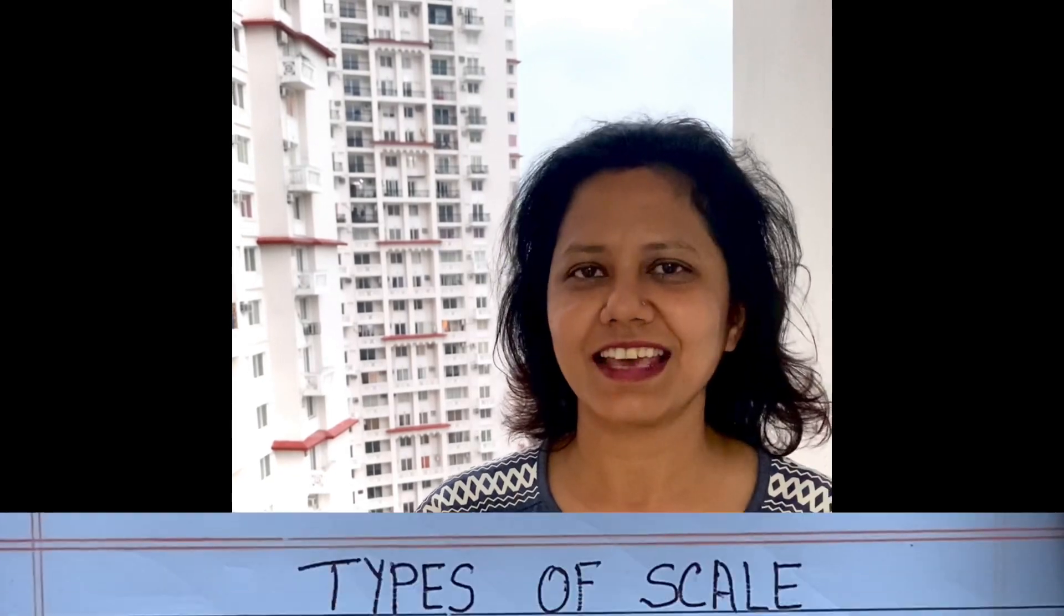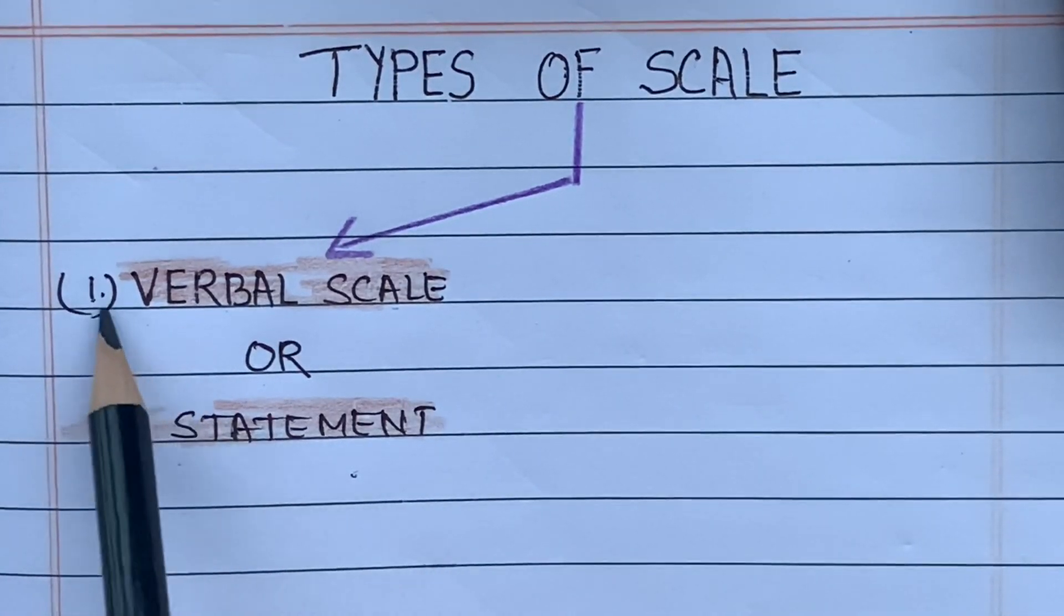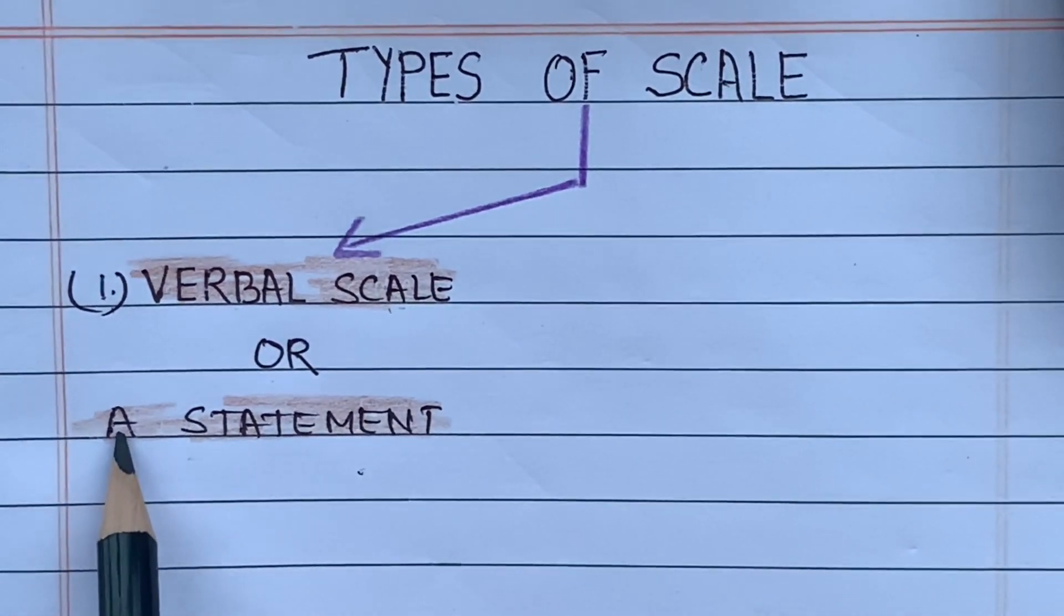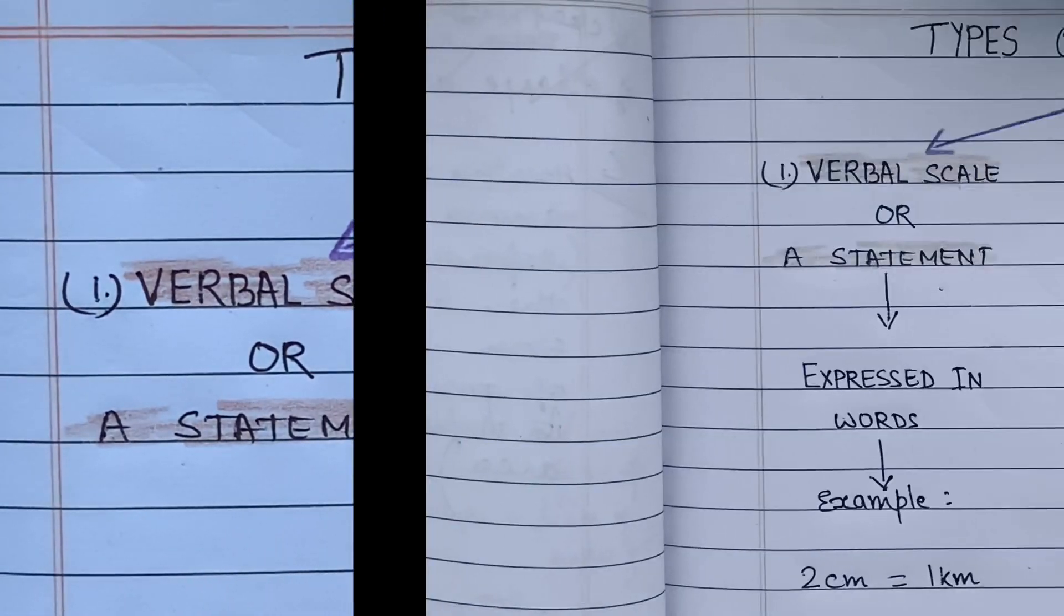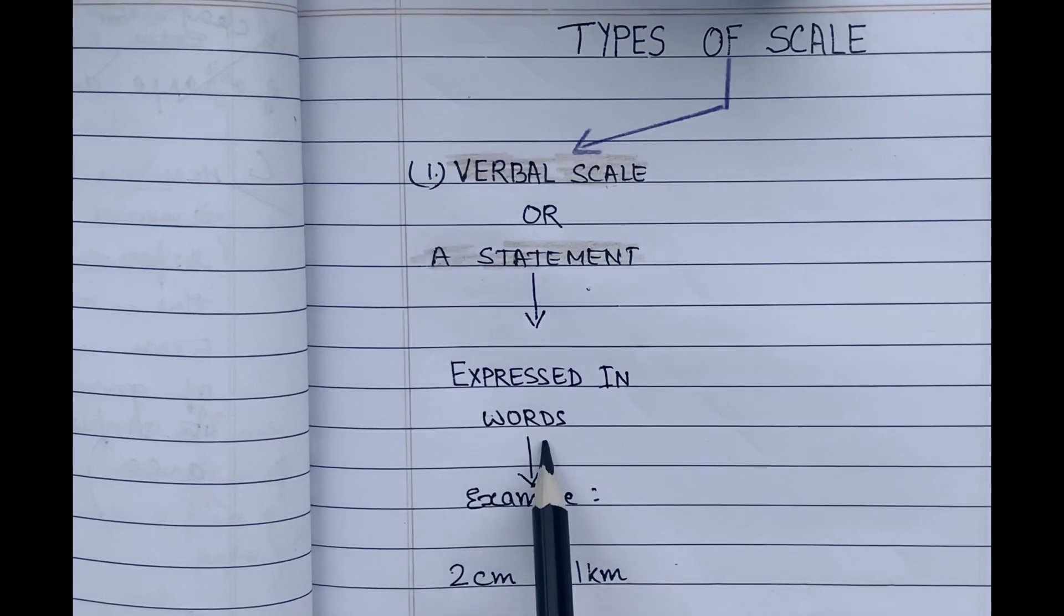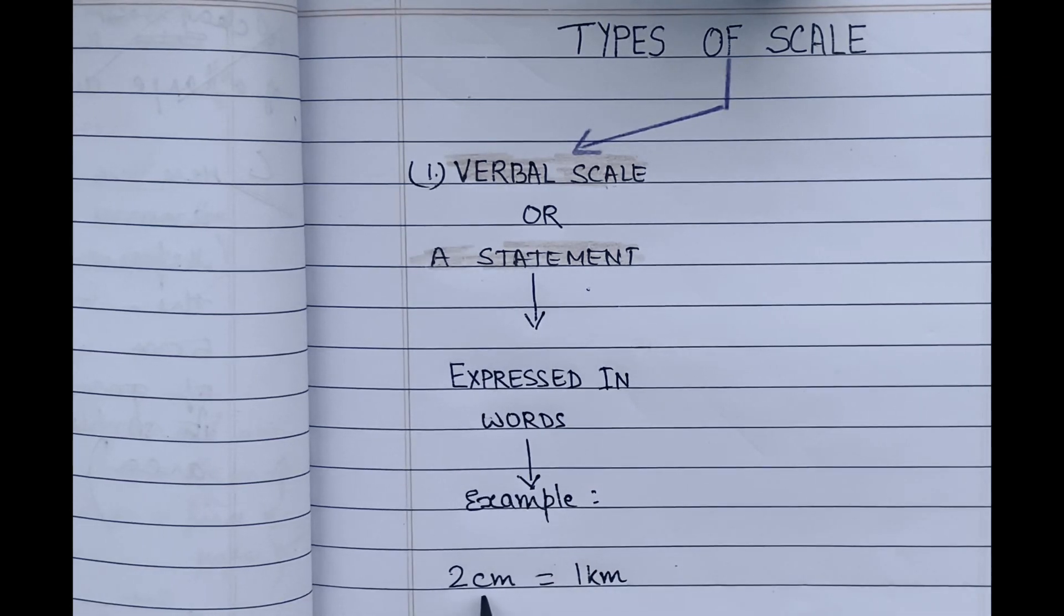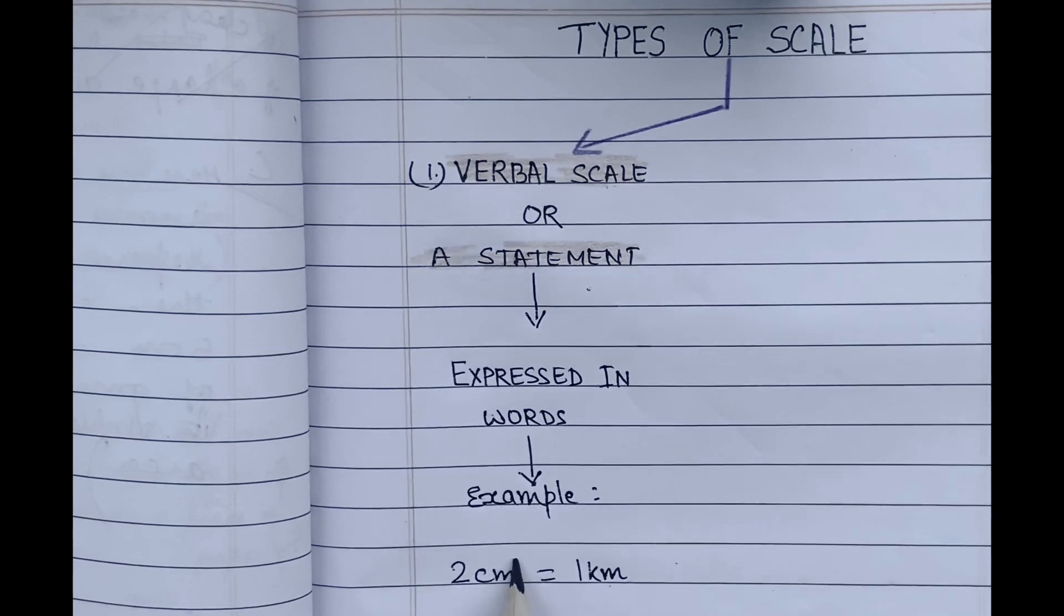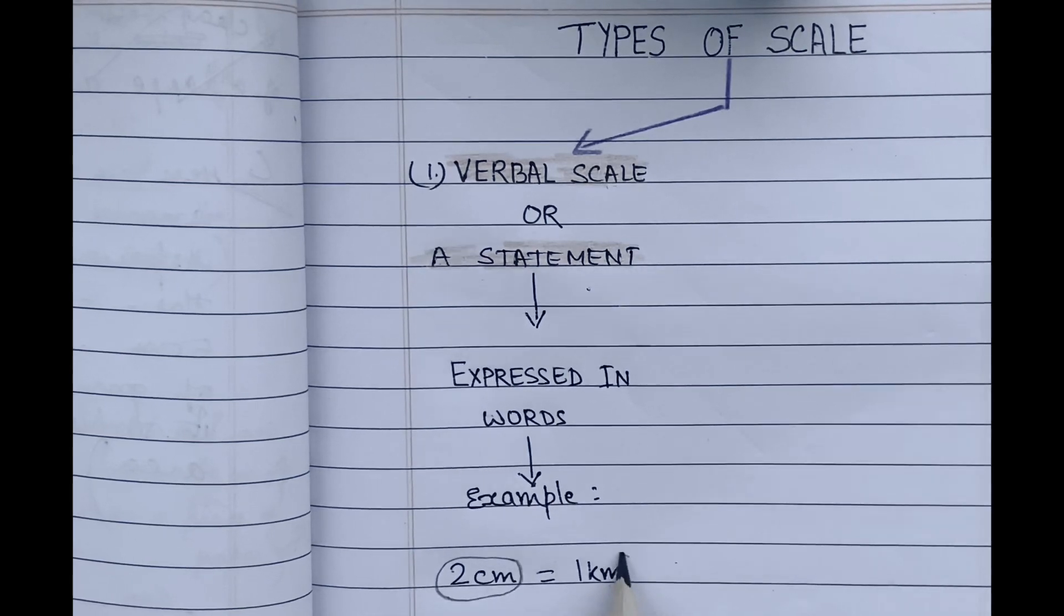Hello friends, in today's video I will explain three different types of scale. Let's begin with number one: verbal scale, also known as a statement. In this method, the scale is expressed in words. For example, 2 centimeters equals 1 kilometer, which means that 2 centimeters on the map represents 1 kilometer on the ground.